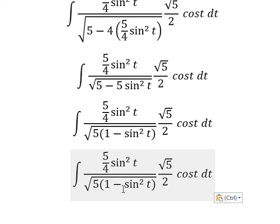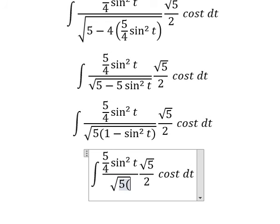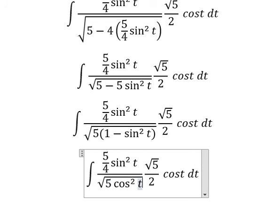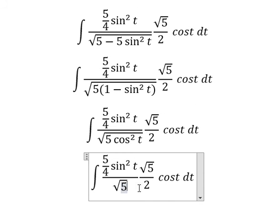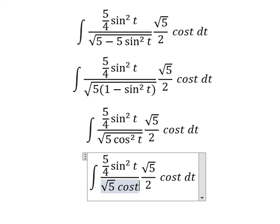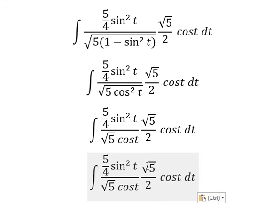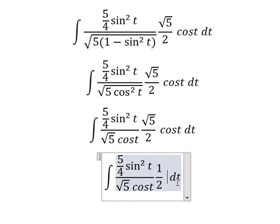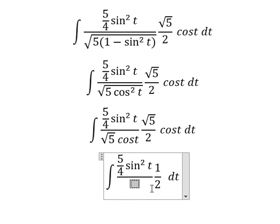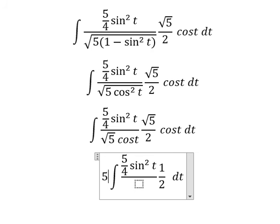1 minus sin²(t) we change to cos²(t). The square root of that gives us the square root of 5 times cos(t). After simplification, 5 over 4 and 1 over 2 give us 5 over 8.